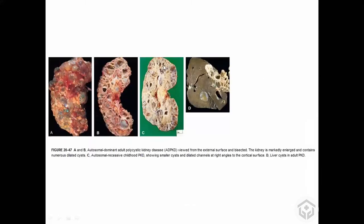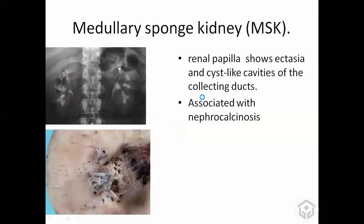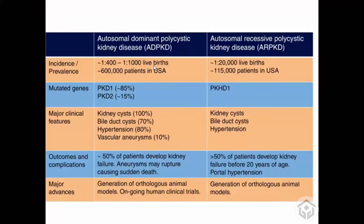In contrast, autosomal recessive polycystic kidney disease has tiny cysts, and it is common in children who usually die early due to renal failure. Autosomal dominant polycystic kidney disease also develops liver cysts as well. In summary: autosomal dominant type is common, develops kidney cysts and liver cysts, causes hypertension, and patients develop berry aneurysms at the circle of Willis. These patients are seen in adult life.